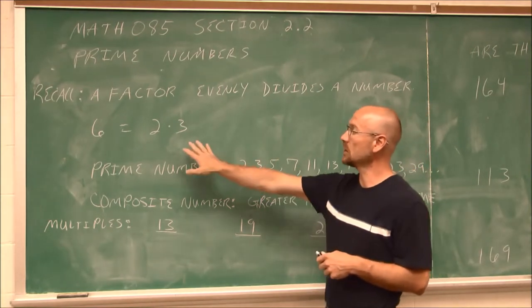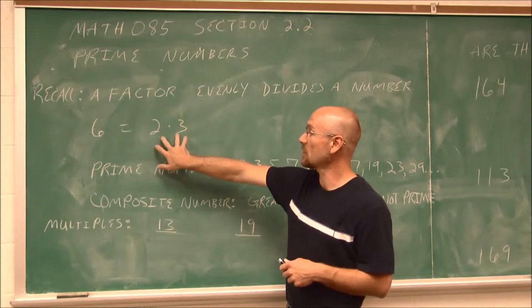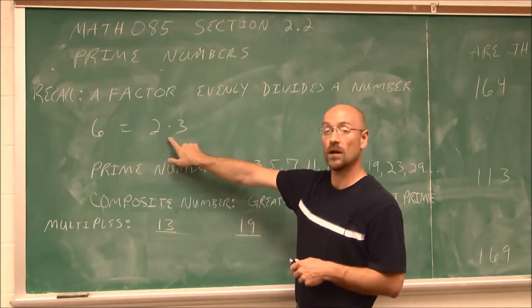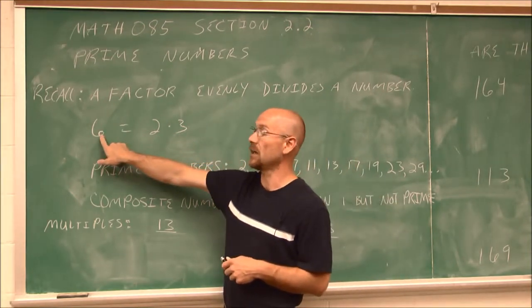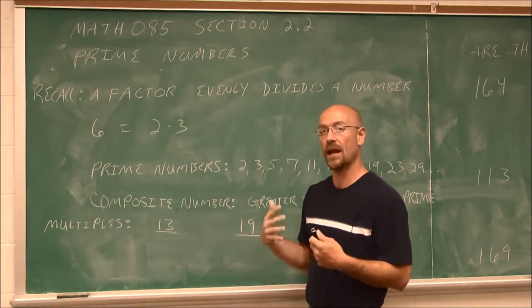So let's look at an example. If I have 6, well, 6 equals 2 times 3, which means these are the factors. Either one of these would evenly divide into 6. But what about numbers that can't be evenly divided by anything?